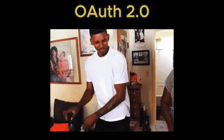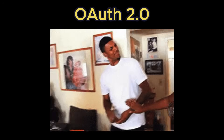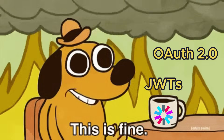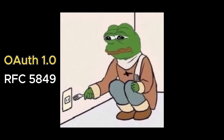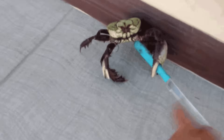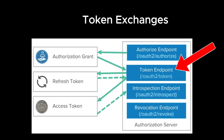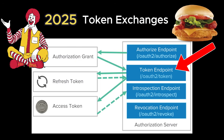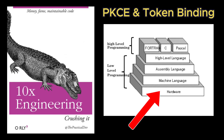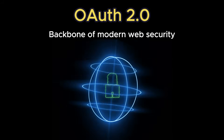99% of developers don't get OAuth 2.0. Many can't even begin to explain the difference between OAuth 2.0 and JSON web tokens. Knowing the difference between OAuth 1.0 and OAuth 2.0 is table stakes, and it simply does not cut it anymore. Understanding basic token exchanges is the bare-bones expectation in 2025 for every competent junior engineer. But the engineers who get ahead understand the low-level security flows like PKCE and token binding that make OAuth 2.0 the backbone of modern web security.